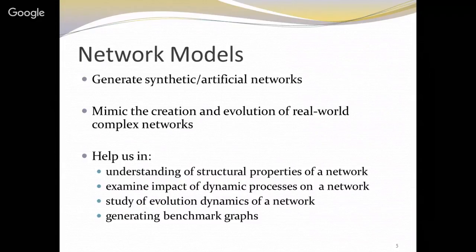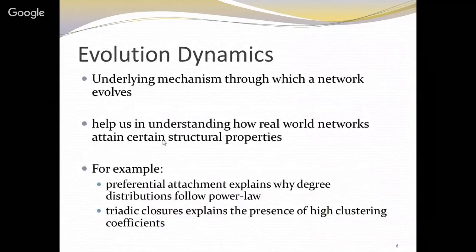These models also help us analyze the impact of different dynamic processes such as epidemic spreading and influence mining. Importantly, they help us understand the dynamics behind the formation of a network and can be used to generate benchmark graphs. The underlying mechanism through which a network evolves is termed evolution dynamics. For example, preferential attachment explains why degree distribution follows the power law, and triadic closure explains the presence of high clustering coefficient in any network.